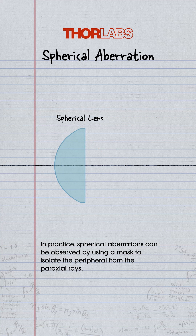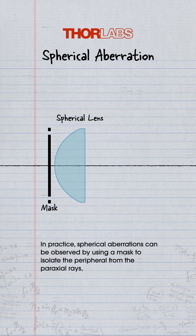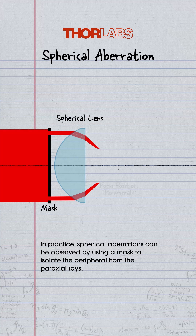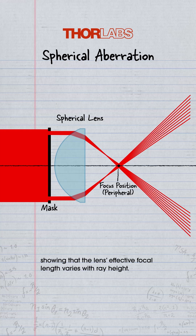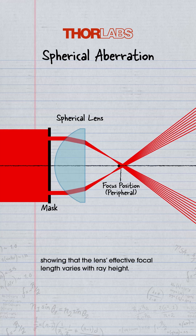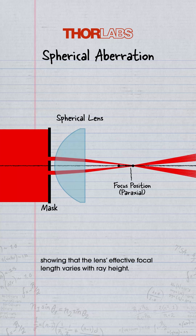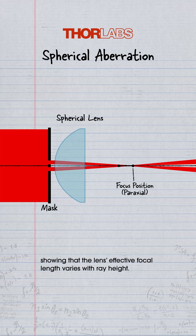In practice, spherical aberrations can be observed by using a mask to isolate the peripheral from the paraxial rays, showing that the lens' effective focal length varies with ray height.